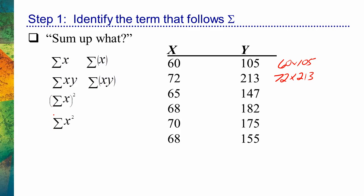Here's another example. You can see that these are very similar, but they're asking for very different things: the sum of x squared. So sum up what? It's saying sum up squared x values. Here are all of our x values — what this equation wants us to do is sum up squared x values. So we would take 60 and square it, 72 and square it, and so forth. And once we find all those squares, we add them up.